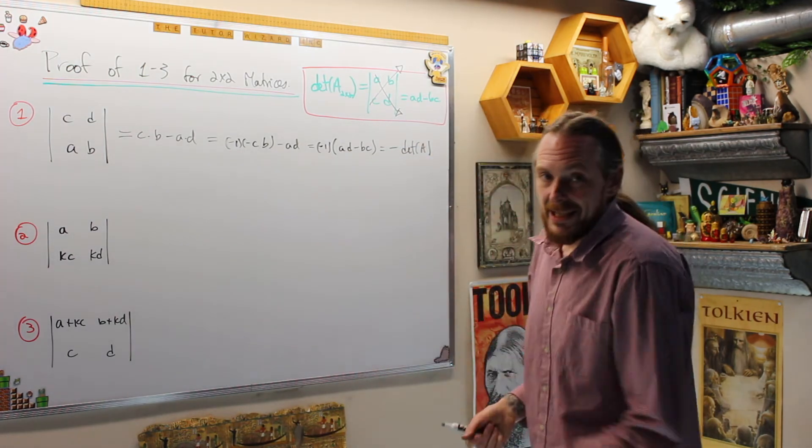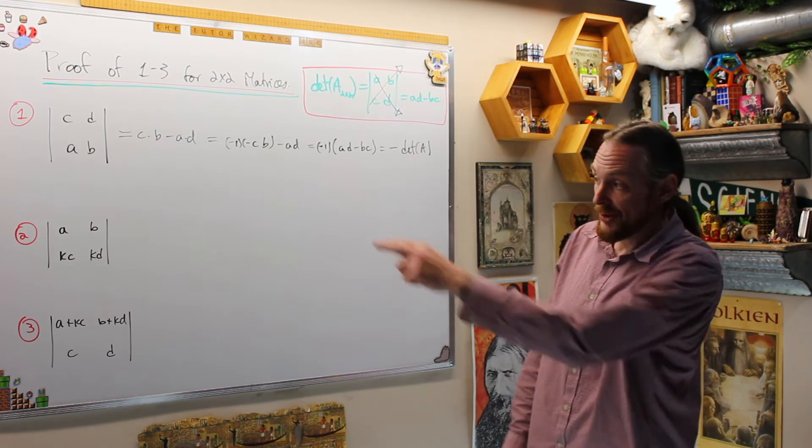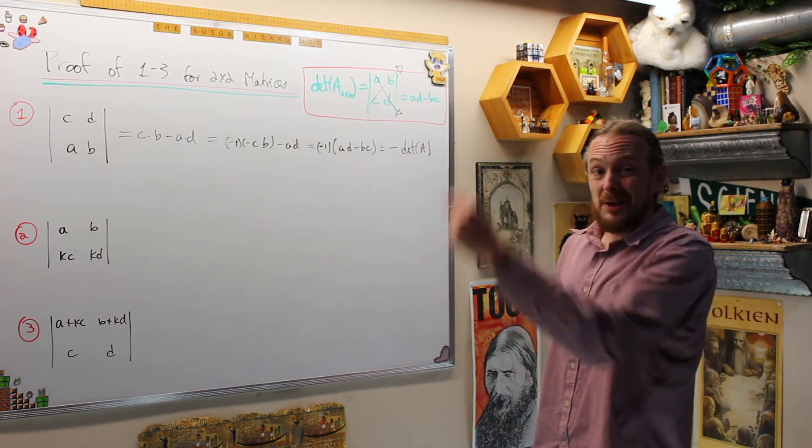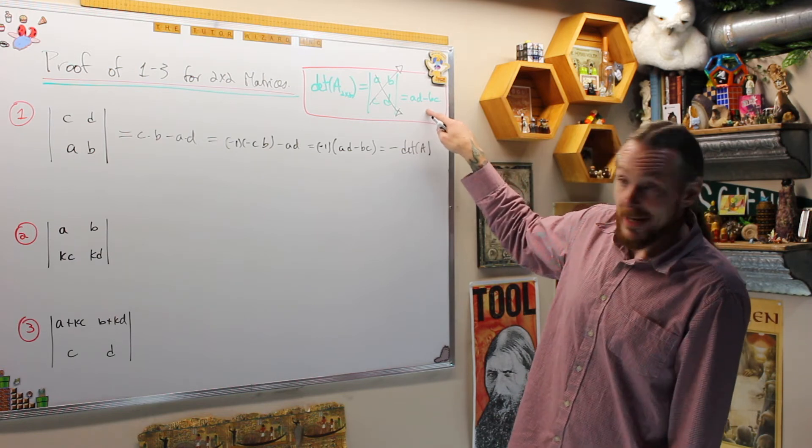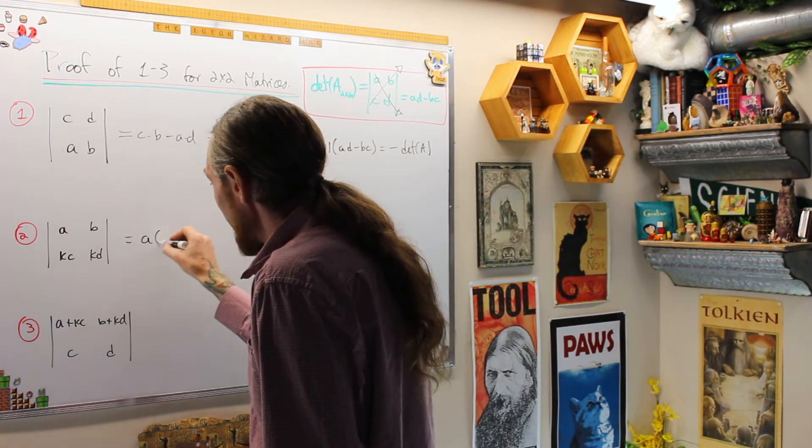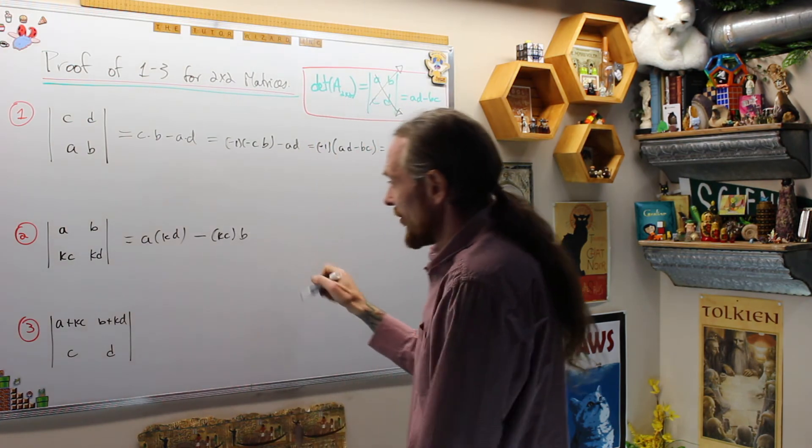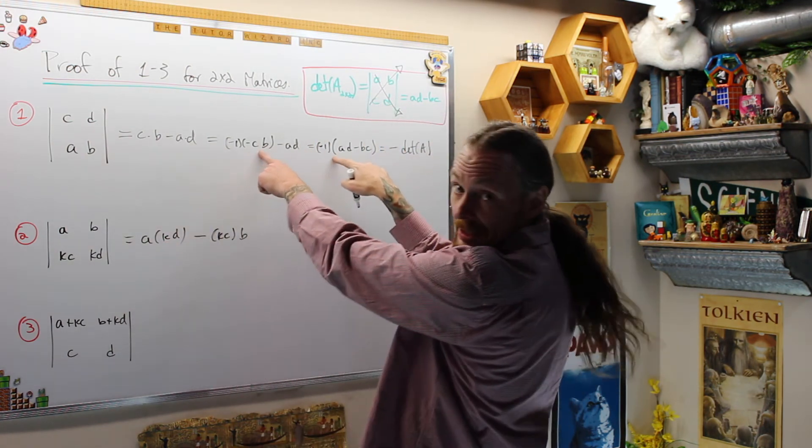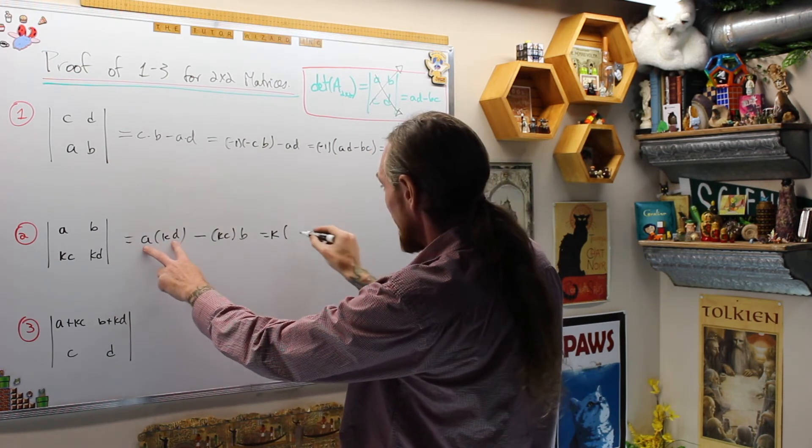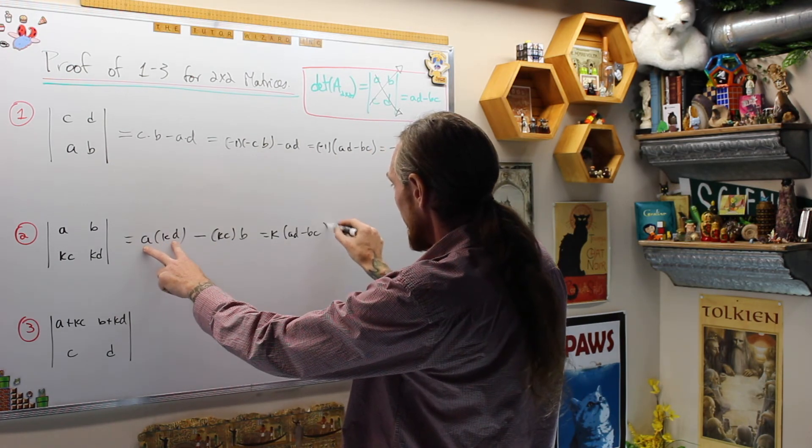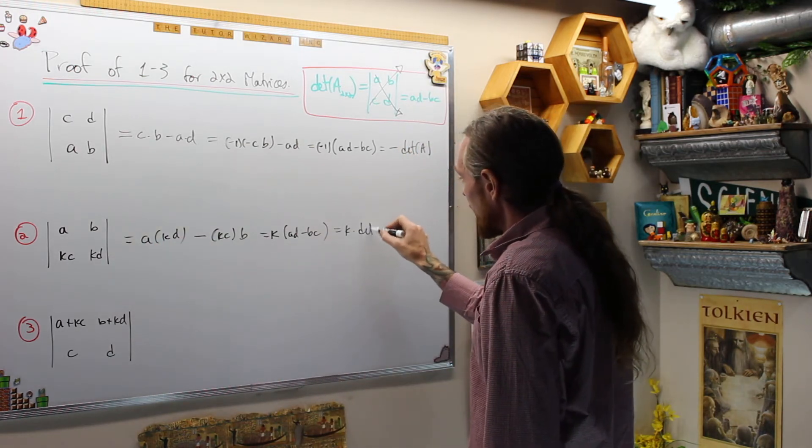For the next property, now what it's saying is if you multiply a row or a column of a matrix by an entry K, you have to multiply the determinant by that value K. We know the determinant of A is AD minus BC. What is it here? It's going to be A times KD minus KC times B, which is just like the negative one here. I have a K in both terms. I can factor that out. That's K times AD minus BC. That is the determinant of A.